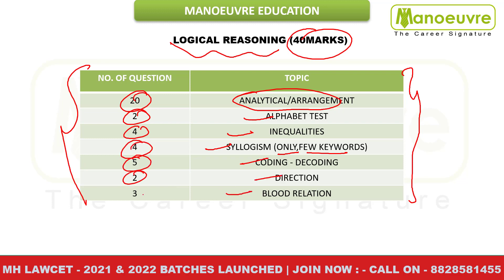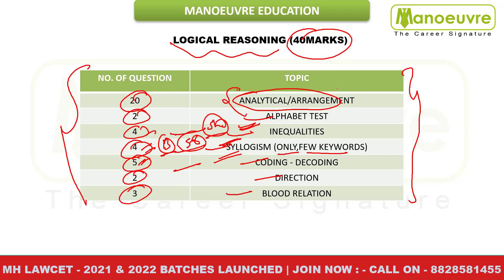Direction: 2 questions. Blood relation — again kind of arrangement — family tree type question: 3 questions. Inequality, syllogism, and coding decoding — these 4, 4, and 5, totaling 13 questions — can be done in a bare minimum of 5 to 6 minutes if you know the shortcut very well. Arrangement questions that I had covered in class and live sessions were 2 steps above what appeared in the exam.